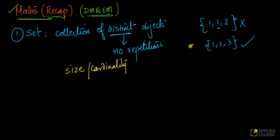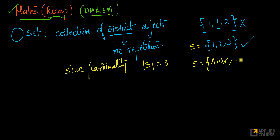For example, let us assume this is set S. We write the size of set S with two vertical bars — this is the cardinality of the set — and it is equal to three because there are three items here. Similarly, imagine if I have a set of alphabets A, B, C, and so on up to Z. Let us call this set S dash. The cardinality of S dash is 26 because there are 26 uppercase alphabets in English.